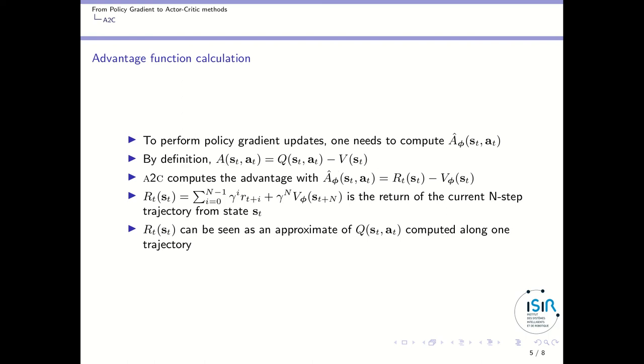If you read the paper, A2C computes the advantage not in this way, but using a particular formula. In this formula, R_t corresponds to the return of the current N-step trajectory from state s_t. You accumulate rewards from the current state to the Nth one, then take gamma to the power of N times the value function corresponding to the next state you reach after N steps. This can be seen as an approximate value for the Q function, because Q(a_t, s_t) corresponds to performing several trajectories from that particular state.